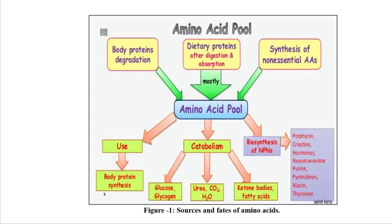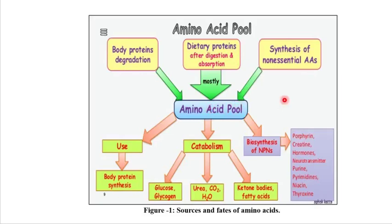This figure represents the amino acid pool. The sources supplying this pool are: dietary protein after digestion and absorption broken down into amino acids; body protein degraded into amino acids; and synthesis of non-essential amino acids via biosynthetic pathways. All three sources provide the pool with amino acids. There is no physical location called the amino acid pool — it is a virtual concept.